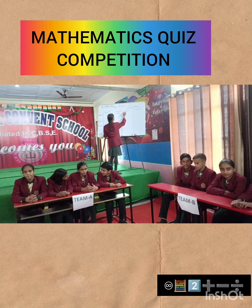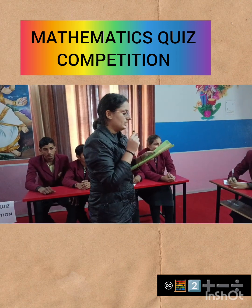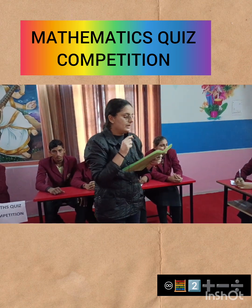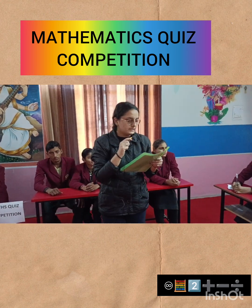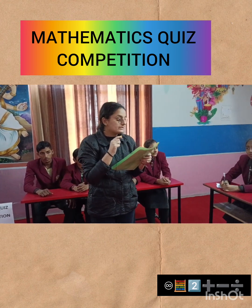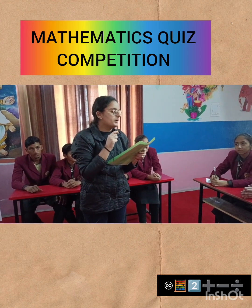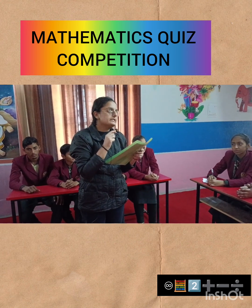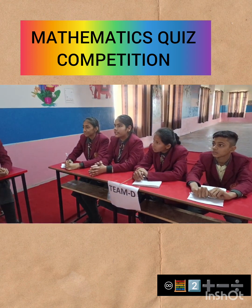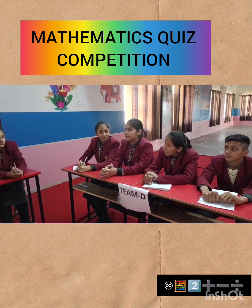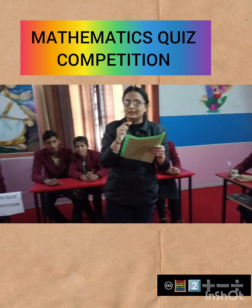Next, Team D, your question: the sum of the measures of the external angles of a polygon is dash. The right answer is 360 degrees.